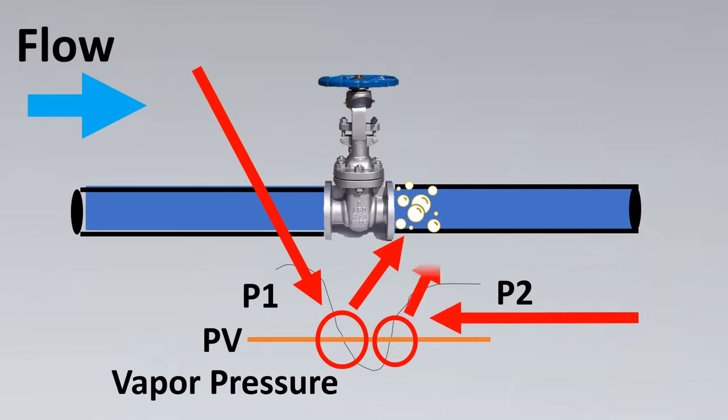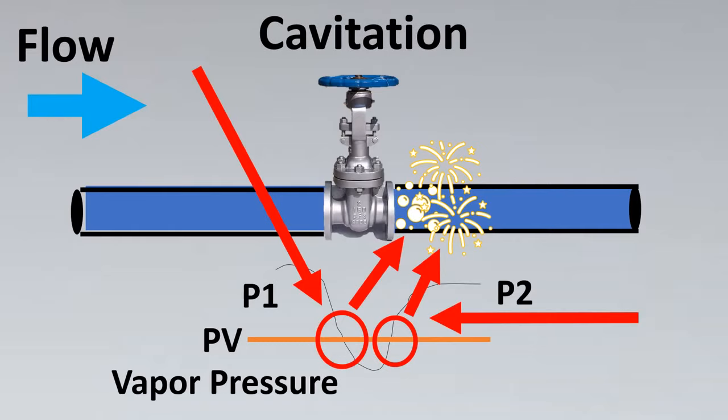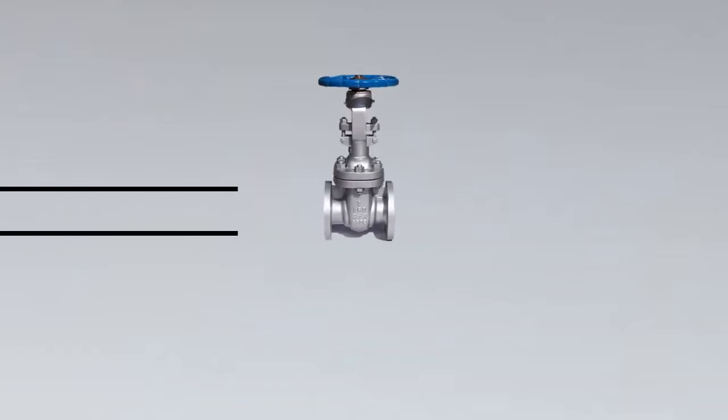What is going to happen is the bubbles are going to burst to come back to liquid state, which is called popping, which has very high velocities that can damage the valve and the piping downstream. This entire phenomenon is called cavitation.